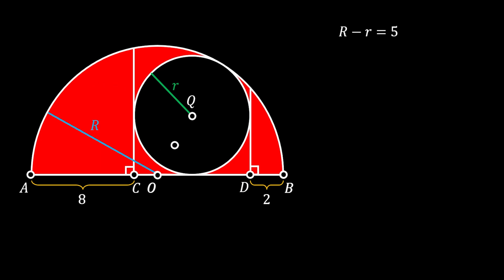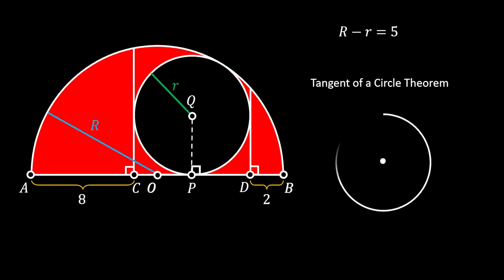Now let's mark the point of intersection between the full circle and the diameter of the half circle as P. The line from P to Q must be perpendicular to line AB by the tangent-radius theorem: if a tangent line touches a circle, the radius drawn to the point of tangency always makes a 90-degree angle with the tangent. Since AB is tangent to our smaller circle, this applies here.